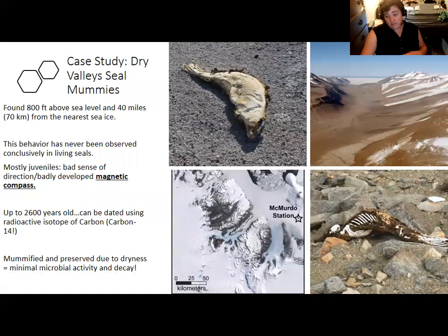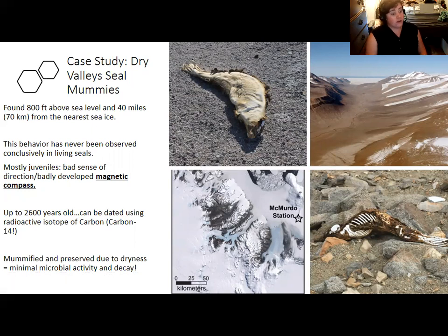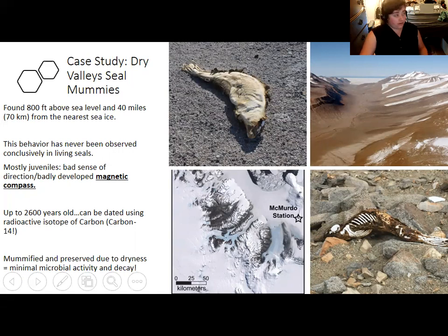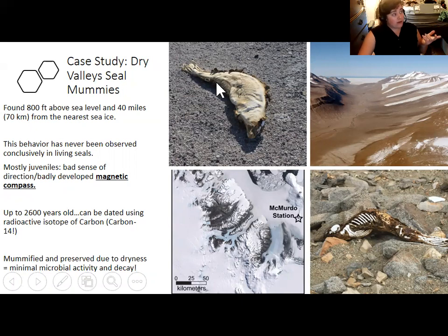The seal mummies can be dated using carbon dating and have been documented as being as old as 2,600 years. The reason they've stayed intact so long is that even though microorganisms feed on them — since they're one of the few food sources in the dry valleys — it's so cold that decomposition happens very slowly and their skin dries out before it can completely decompose. You end up with these mummies just like human mummies preserved by drying the skin before microorganisms can act. In Antarctica these mummies happen naturally on their own because it is so cold there is very little microbial activity.